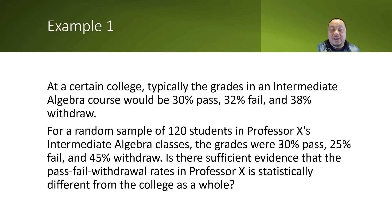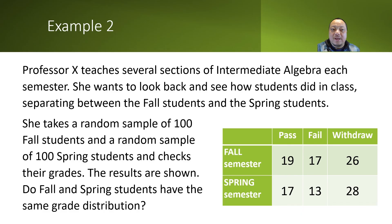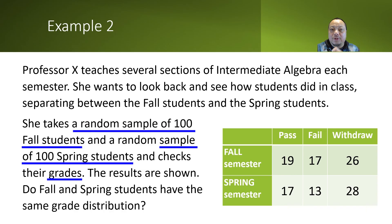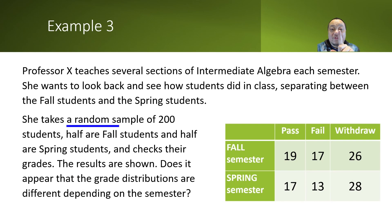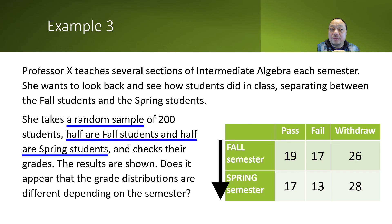Let's do one more run through of the questions we've seen. Example 1: there's one sample — the 120 students — and one variable — the grade. Goodness of fit. Example 2: there are two samples — one of fall students and one of spring students. There's one variable: the grade, either pass, fail, or withdraw. Homogeneity. Example 3: there's one sample but two variables. The students are separated between fall and spring, so semester is the first variable. They're also separated by pass, fail, or withdraw, so grade is the second variable. One sample, two variables: independence.